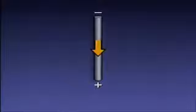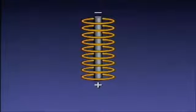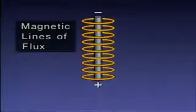This illustration represents a section of wire with current flowing through it from negative to positive. The flow of current through the wire produces a magnetic field around the wire. The magnetic field consists of a series of lines known as magnetic lines of flux. All motors work because of the interaction of two or more separate magnetic fields.